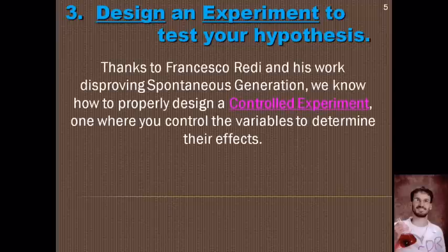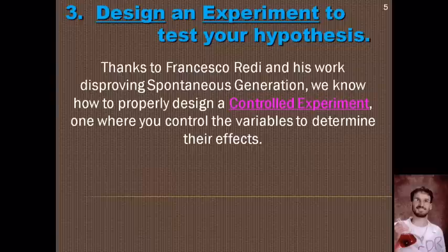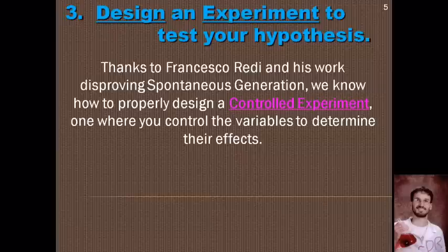Step three is designing an experiment. Thanks to Francesco Redi — that guy you learned about in seventh grade who was doing work on spontaneous generation and was the first to disprove it — he was the very first scientist ever to conduct what's called a controlled experiment. This is an experiment where you have two groups: one group you leave like it normally is, and another group you tinker with. Then you see if the two groups end up being different, and if they do, it's the result of what you were tinkering with.